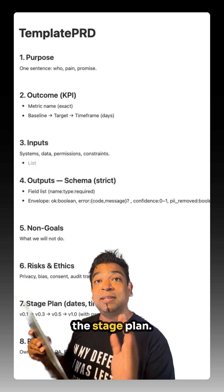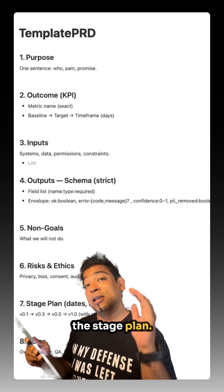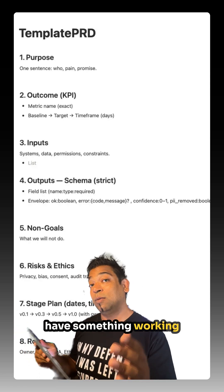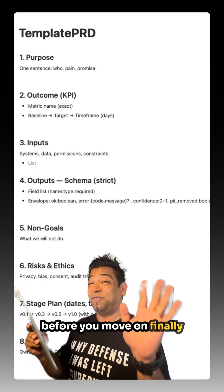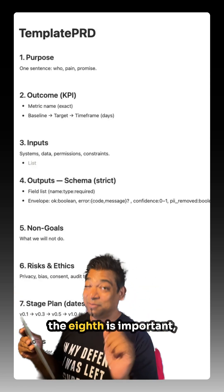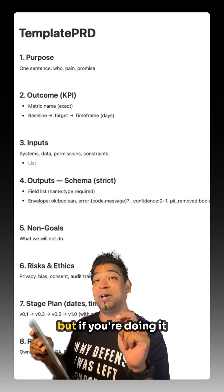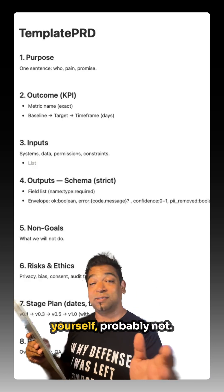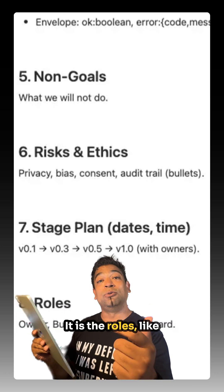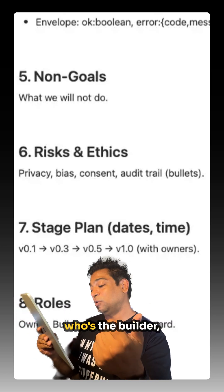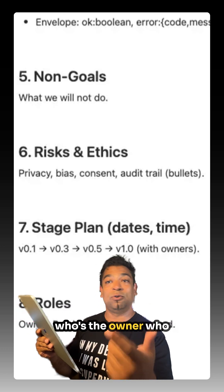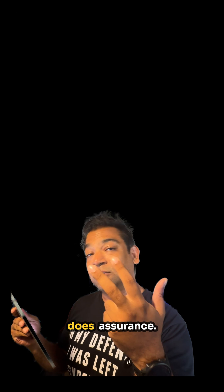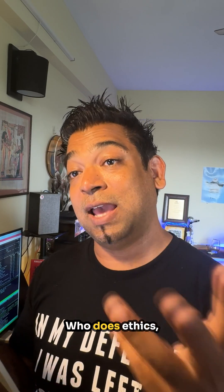Number seven is the stage plan — have something working before you move on. Finally, number eight is important, but if you're doing it yourself, probably not. It is the roles: who is the builder, who's the owner, who does assurance, who does ethics, who looks at the risks and does the testing.